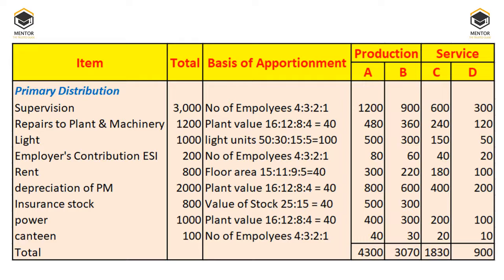We then total up the expenditure and make the summation for departments A, B, C, and D. This is called primary distribution, where we have distributed the entire expenditure across all departments. I hope that is clear.